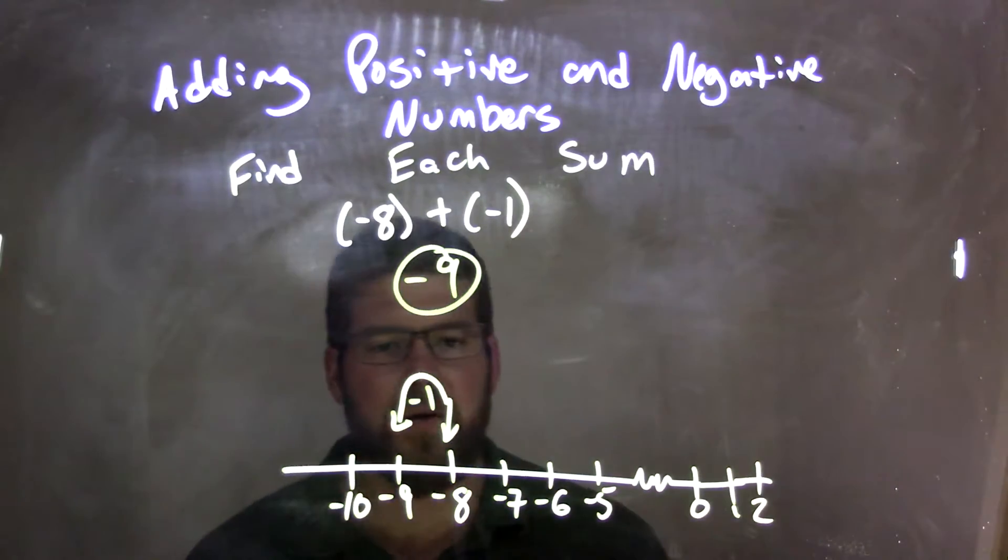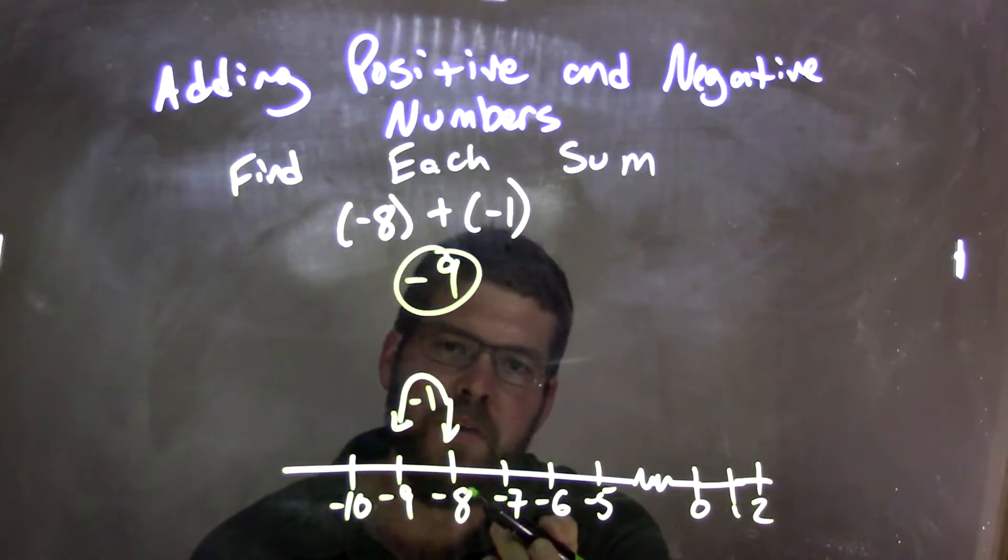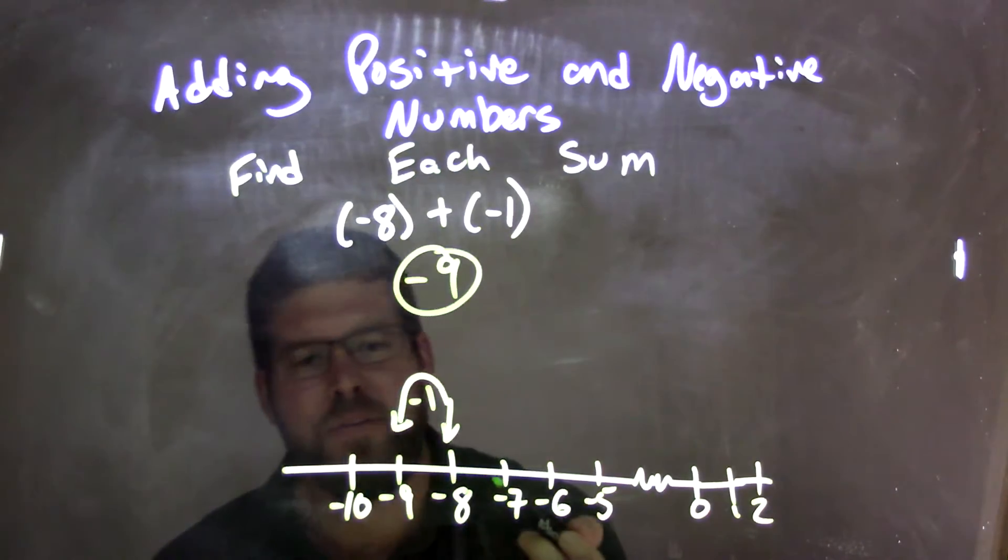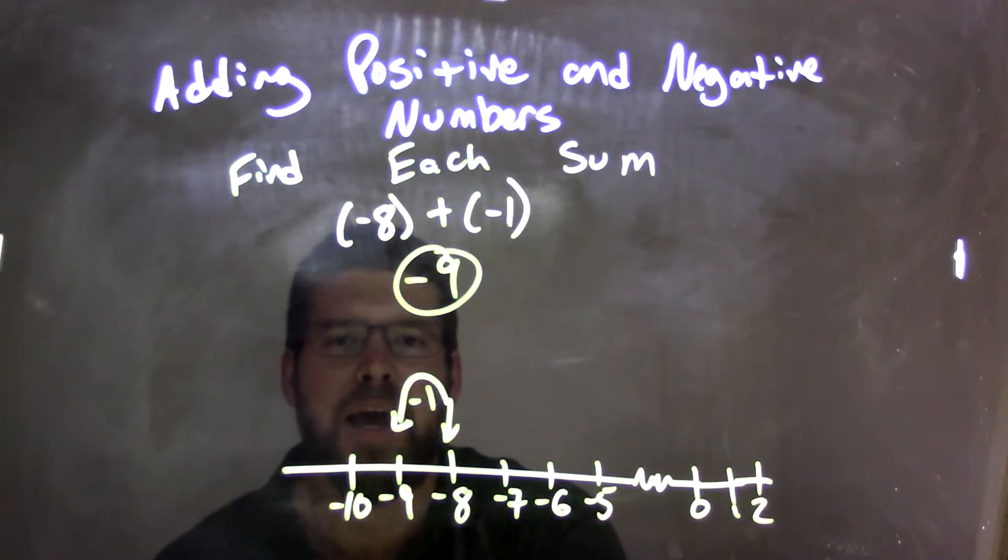That's right there. So again, we start with negative 8, we added one negative unit to it, we move to the left, and we have negative 9.